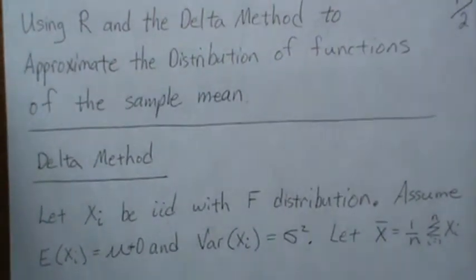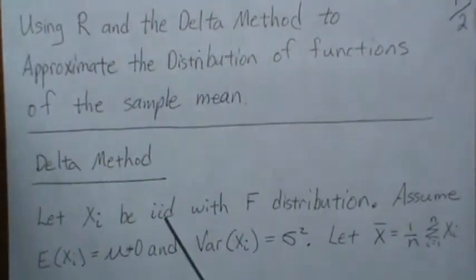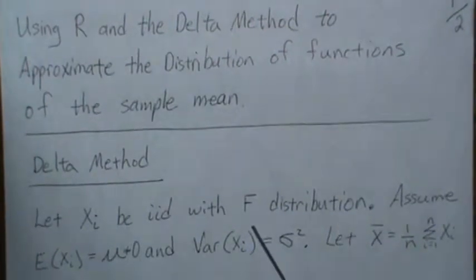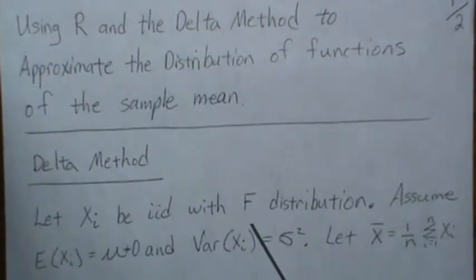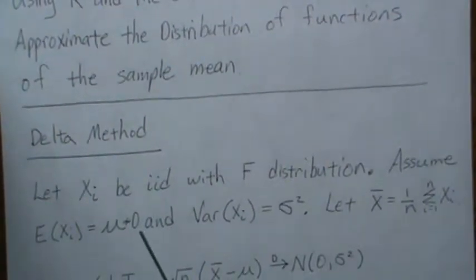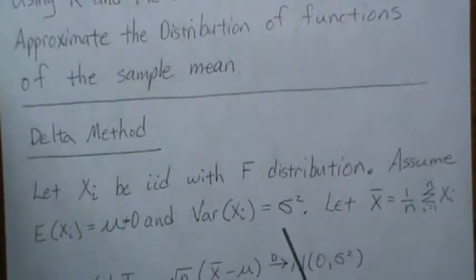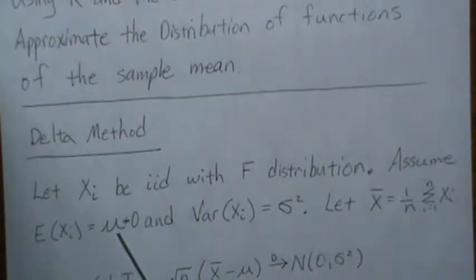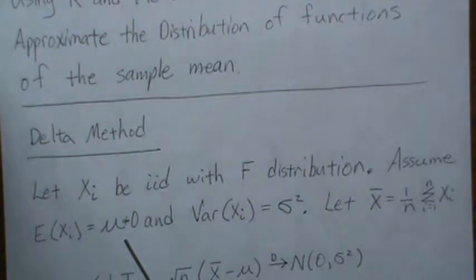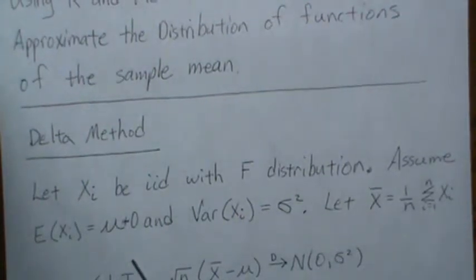First, let's let X be IID with some distribution F. It could be normal, could be binomial, etc. Assume that it has some mean that's not zero and some variance. For those special cases where it is zero, I may do another video. But for this video, we're going to assume it's not zero.